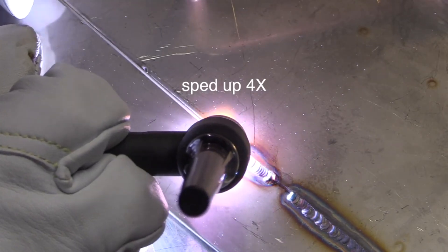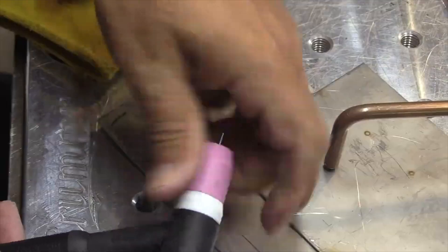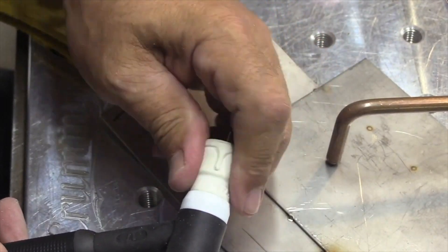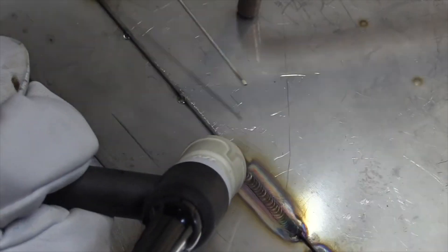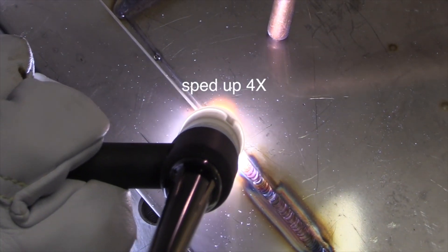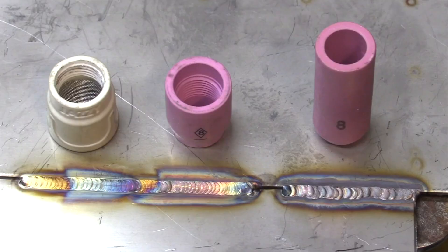Same stick out, went to a stubby gas lens number eight cup, same gas, way way better. You can also stick a jazzy 10 ceramic onto a stubby gas lens, same gas flow, same stick out and get even better results. That's why I almost always use a stubby gas lens setup with either an eight cup or something larger like a furic ceramic cup instead of the standard ones.